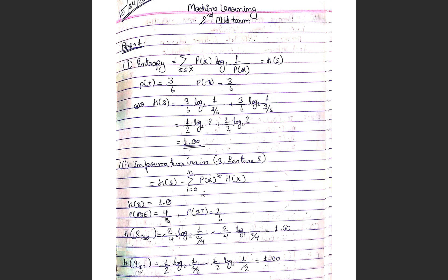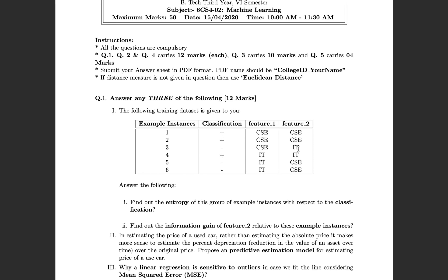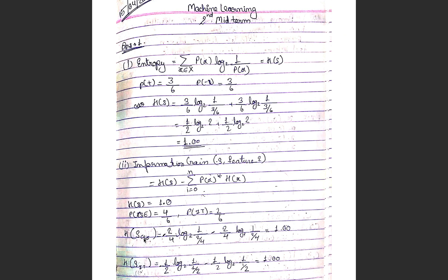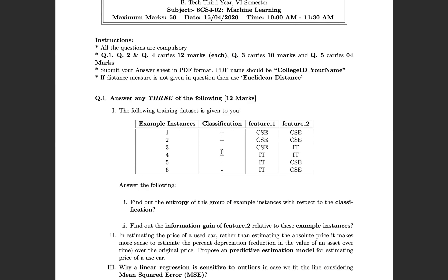We are computing information gain for feature two. Feature two contains two values: CSE and IT. Out of the six instances, four belong to CSE and two belong to IT. For each subset we will calculate the entropy using the formula. For CSE, there are four total instances in that group.